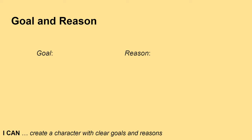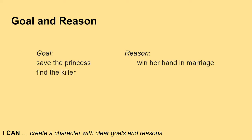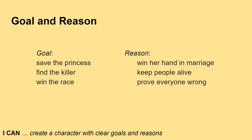Let's look at some goal-and-reason examples. Goal: save the princess — reason: win her hand in marriage. Goal: find the killer — reason: keep people alive. Goal: win the race — reason: prove everyone wrong.